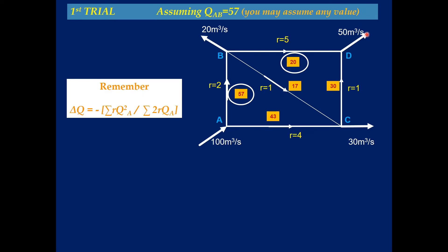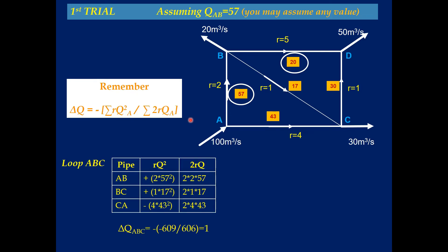The most important formula for the Hardy Cross method calculation must be remembered. We divide this pipe network into two parts: loop ABC and loop BDC. For each loop, we make a table of the different pipes — for loop ABC the pipes are AB, BC, and CA — and we estimate the values of RQ² and 2RQ.